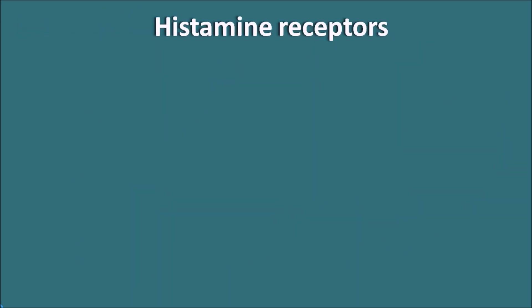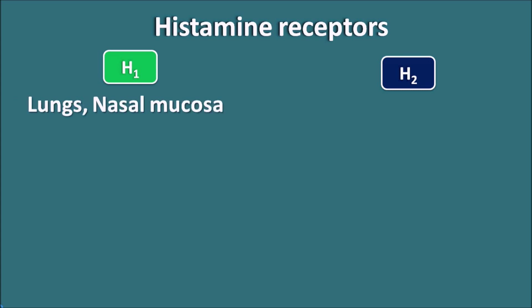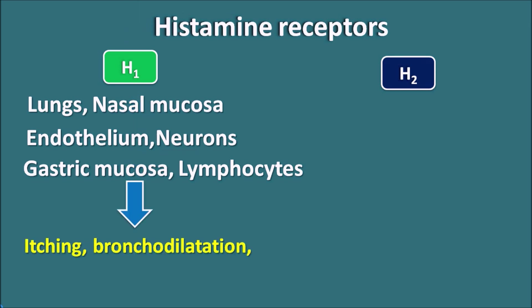Histamine acts through histamine receptors to produce the allergic response. We have different types of histamine receptors, classified from H1 to H4. The important ones are H1 and H2 receptors. H1 receptors are mainly present in the lungs, nasal mucosa, endothelium, neurons, gastric mucosa, and lymphocytes. At all these locations, H1 receptors are responsible for itching, bronchoconstriction, vasodilation, and salivation — all allergic responses produced by histamine through H1 receptors.